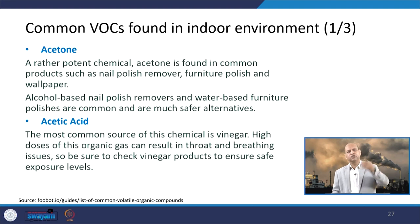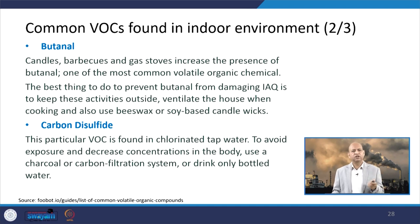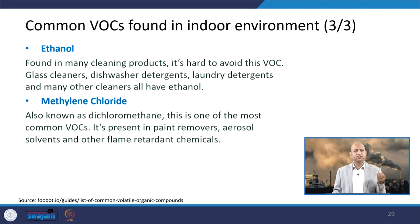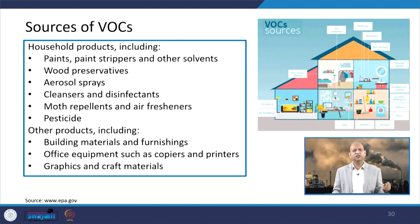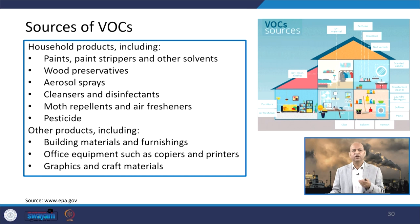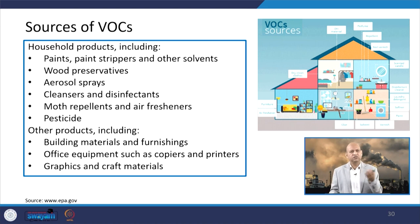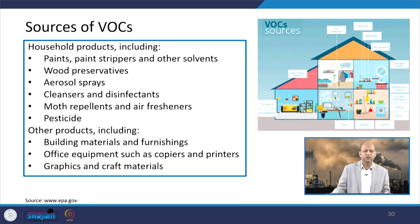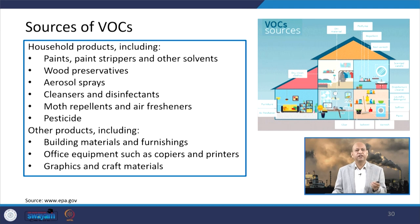Categories of VOCs include acetone, acetic acid, butanal, carbon disulfide, ethanol, and methylene chloride, all having different health impacts. Household products containing VOCs include paints, wood preservatives, and aerosol sprays. Air freshener sprays may smell pleasant but are not good for health due to toxic VOCs. Cleaning and disinfectant products, moth repellants, air fresheners, and pesticides can all be sources of VOCs.